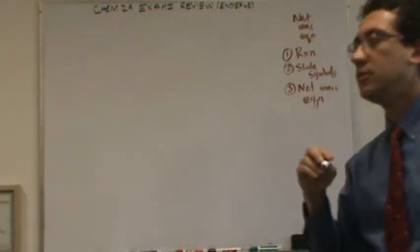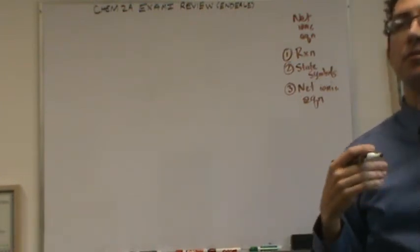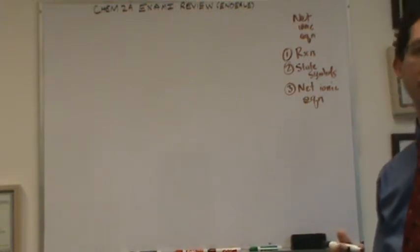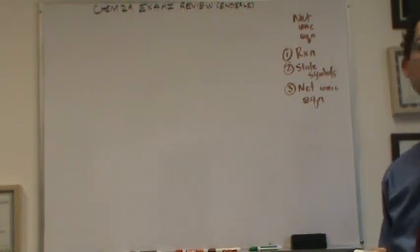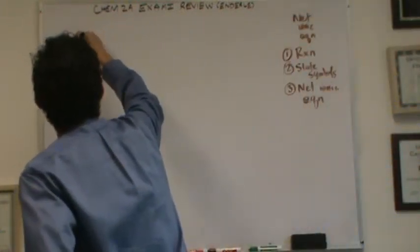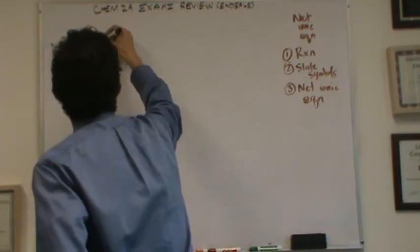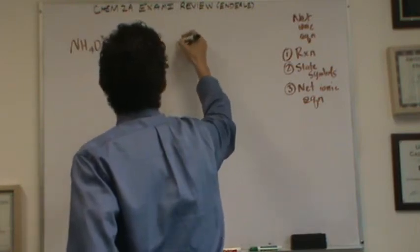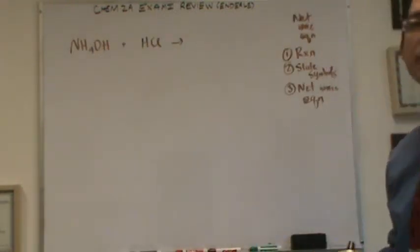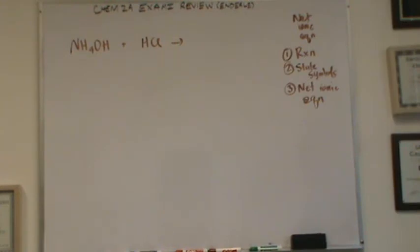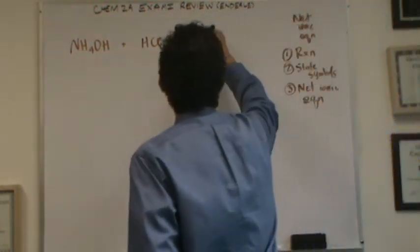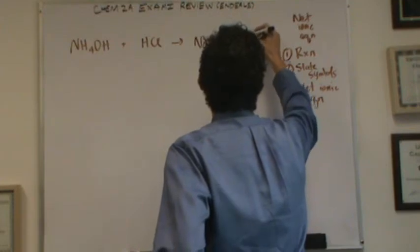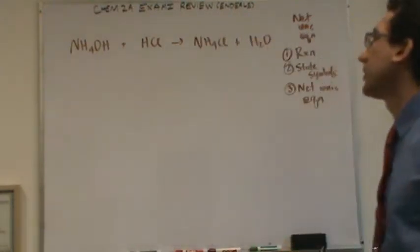Let's say you read a question that said you're mixing ammonium hydroxide and hydrochloric acid in solution. Write the net ionic equation. So you'd go, well, you need to know what ammonium hydroxide is, and you'd need to know what hydrochloric acid is. This is going to be a double replacement, or more specifically, a neutralization, because I have an acid and a base. So this will go to NH4Cl plus H2O, a salt plus water.